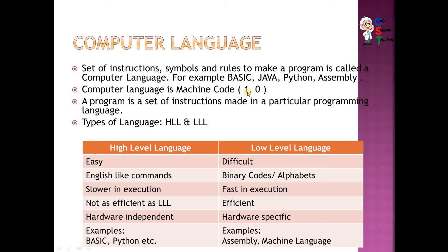In assembly language or machine language, hardware knowledge is required. But in other languages — BASIC, Fortran, Pascal, Python, Java, or any other high-level language — hardware knowledge is not required. The programmer just needs to write what to do; how the task will be done does not need to be specified in the program. So all high-level languages are much easier for humans to understand compared to assembly and machine language. These languages were categorized into two types: high-level language and low-level language.